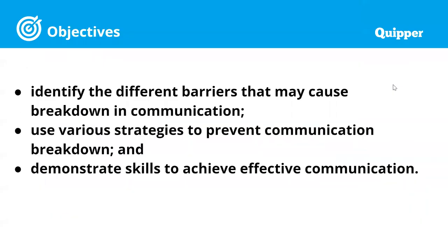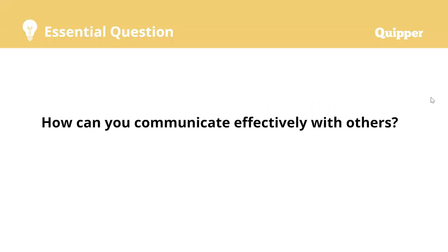In this lesson, we are going to identify different barriers that may cause breakdowns in communication. As part of our previous lessons, these barriers are what we call noise. We are going to identify what these different noises or barriers in communication are. We are also going to use various strategies to prevent communication breakdown and demonstrate skills to achieve effective communication. Here is a guiding question: How can you communicate effectively with others? What is the use of communicating effectively? And what are the possible challenges to achieving effective communication?